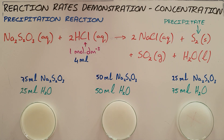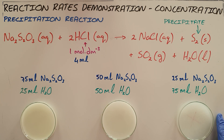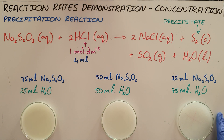We can now see that nearing the end of the reaction, the X marked at the bottom of the least diluted sodium thiosulfate solution has all but disappeared, once again showing us that the higher the concentration of reactants, the greater the speed or rate of that reaction will be.